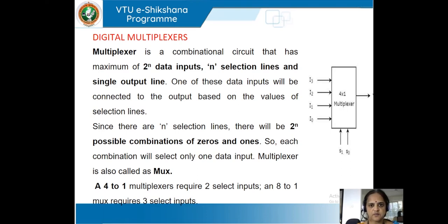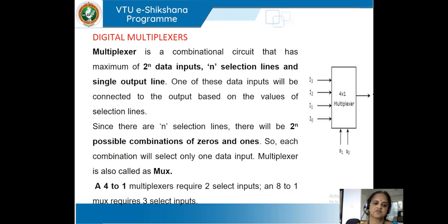A digital multiplexer is a combination circuit that has a maximum of 2 to the power of n data inputs, n selection lines, and a single output. This multiplexer finds many applications in real-time requirements.